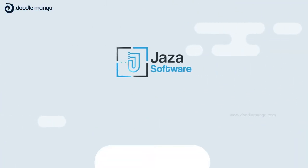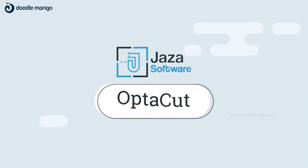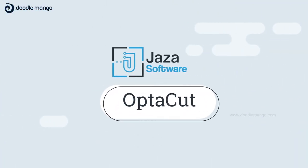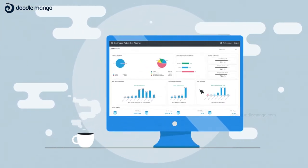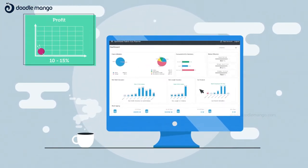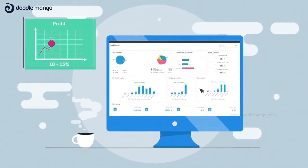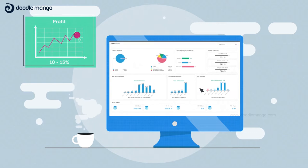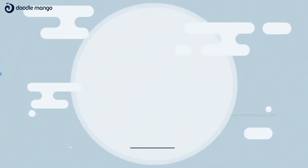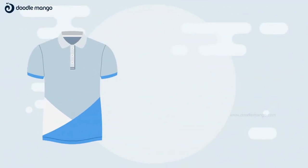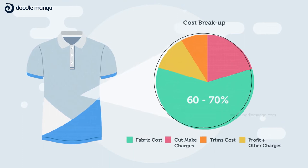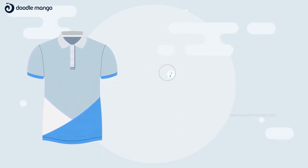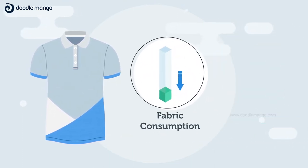Here comes the solution. AS a software brings you OptiCut, the most powerful fabric optimization software that increases your profitability by 10 to 15 percent. Fabric accounts for 60 to 70 percent of total garment cost, so even a small saving can increase the profit considerably.